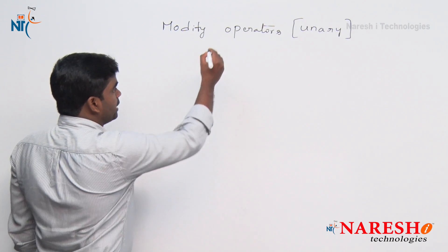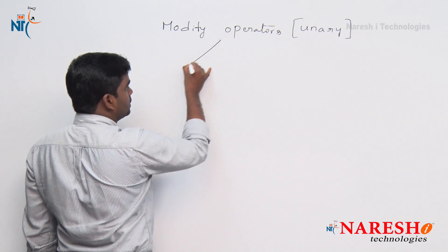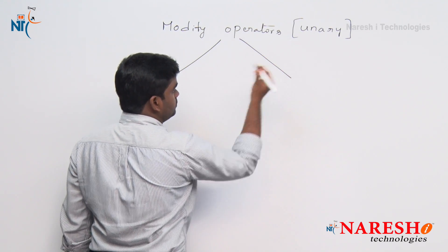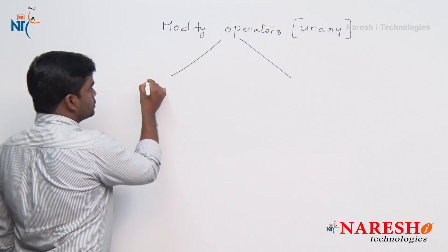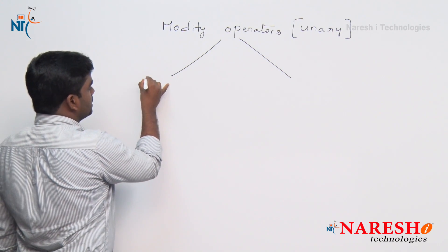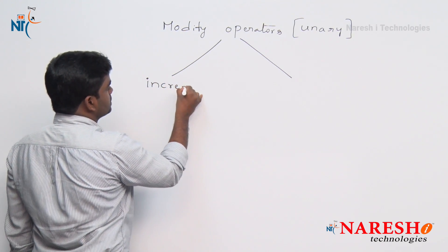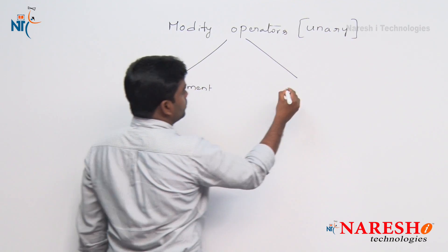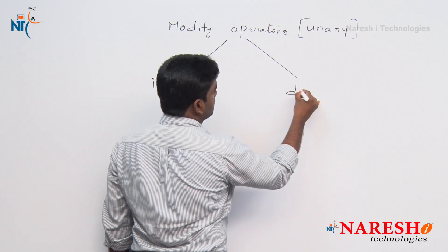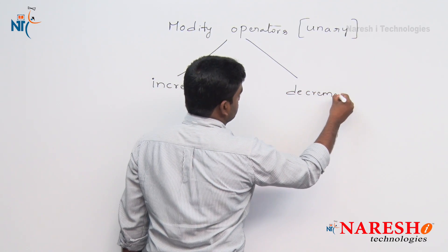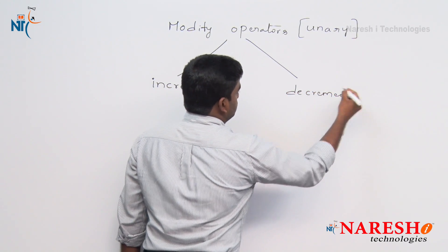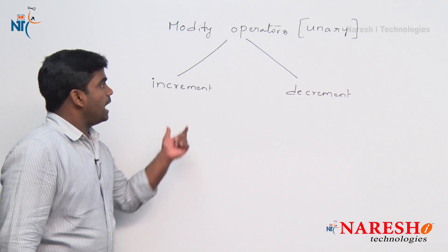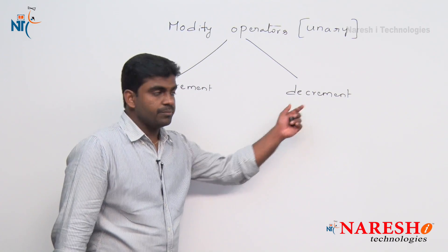Modify operators are broadly of two types: one is increment operators, and the second one is decrement operators — increment and decrement operators.